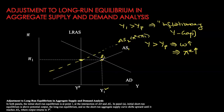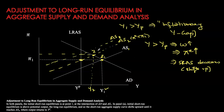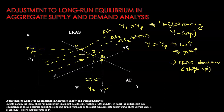The new short-run AS at AS2 reflects the expectation that inflation equals pi 1, the actual inflation observed when the economy was at E1. But at this point we have a new equilibrium GDP Y2, which still shows a positive output gap. The same process continues: as long as there is a positive output gap, it drives up nominal wages and inflation expectations, causing the short-run AS to shift up. This continues until AS4, where the output gap is eliminated and we return to potential — but at the cost of inflation rising to pi 4.